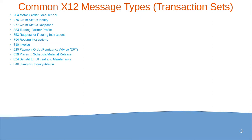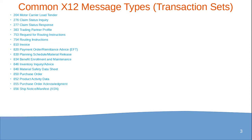Additional transaction sets include: 830 (Planning Schedule/Material Release), 834 (Benefit Enrollment and Maintenance), 837 (Claim and Eligibility), 846 (Inventory Inquiry/Advice), 848 (Material Safety Data Sheet), 850 (Purchase Order — very important and widely used), 852 (Product Activity Data), 855 (Purchase Order Acknowledgement), 856 (Ship Notice/Manifest), 858 (Shipment Information/Bill of Lading), 859 (Freight Invoice), 861 (Receiving Advice), 990 (Response to Load Tender), and 997 (Functional Acknowledgement).